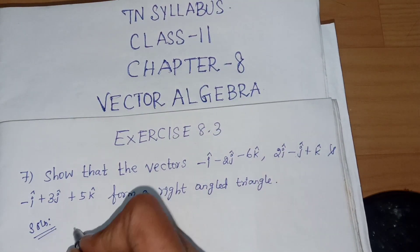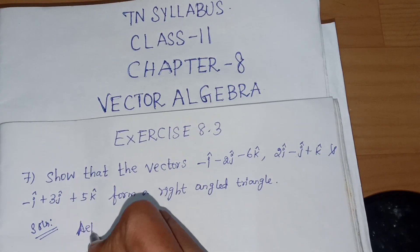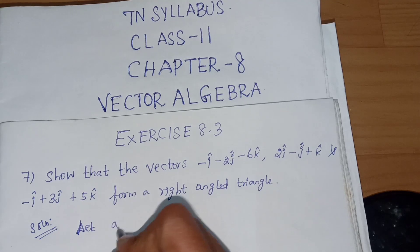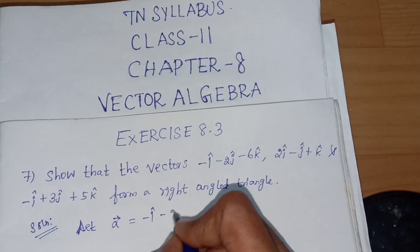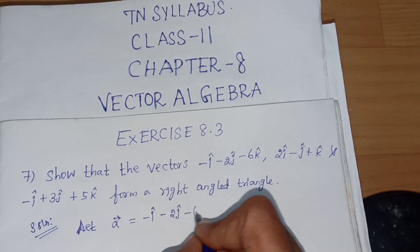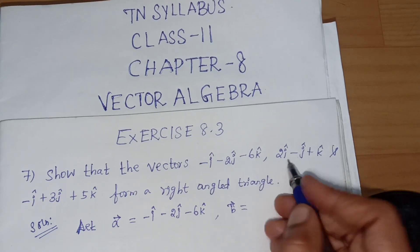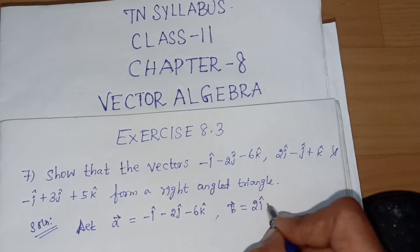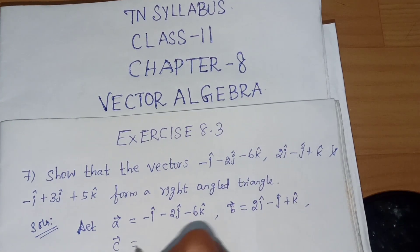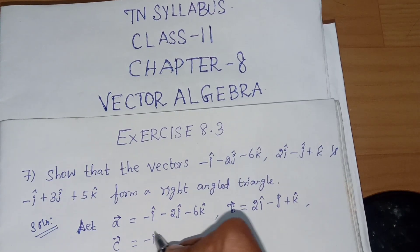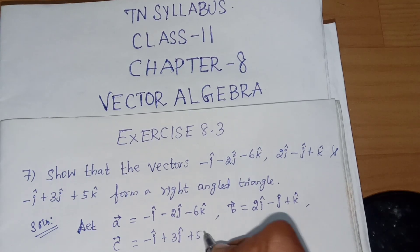Solution. Let a vector equal to (-i - 2j - 6k), b vector equal to (2i - j + k), and c vector equal to (-i + 3j + 5k).